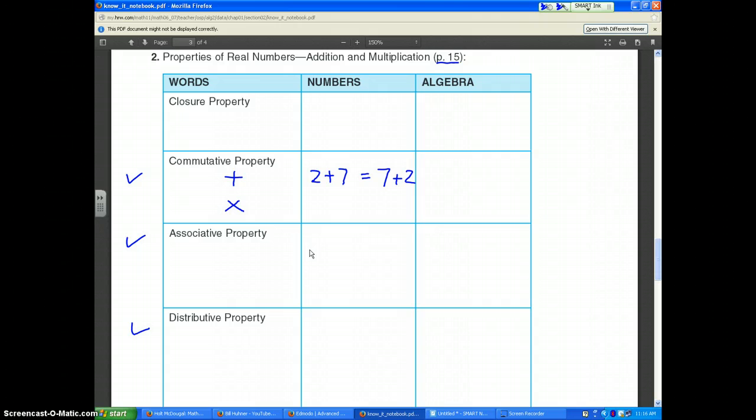Same for multiplication. 2 times 3 is equal to 3 times 2. That's an example of the commutative property using numbers. Now in the next column, it says algebra. Algebra is just the use of letters, and that works the same way.